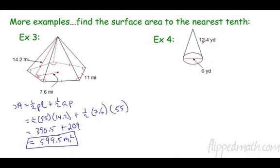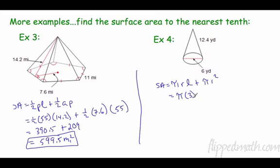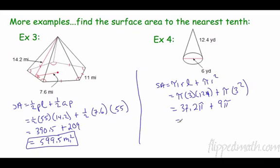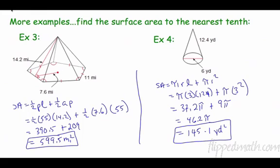For the cone: surface area equals πrl plus πr². The diameter is 6 so the radius is 3, and the slant height is 12.4. That gives π(3)(12.4) + π(3²) = 37.2π + 9π = 46.2π. Rounding to the nearest tenth gives approximately 145.1 yards squared.